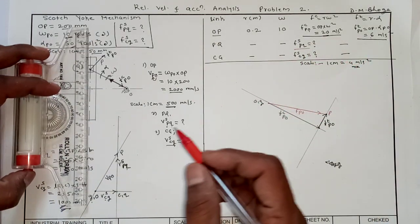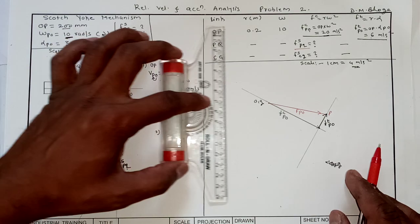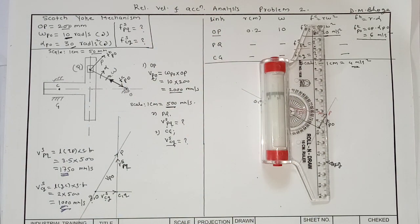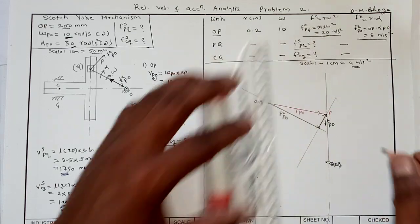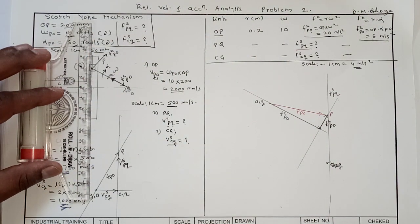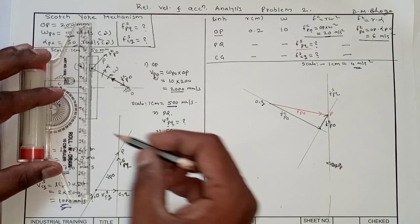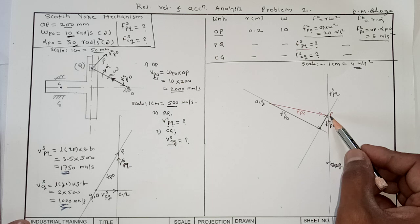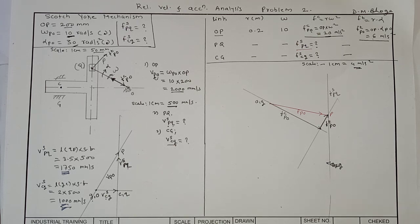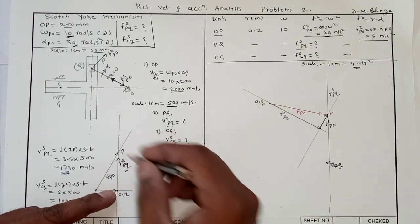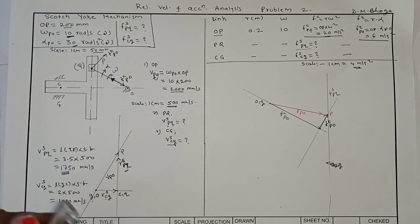The vector FS_PQ passes through point P in the vertical direction, since slider P slides vertically with respect to Q. We do not know the magnitude, so we do not know the length of the vector. We also do not know whether the slider is accelerating or retarding, so the direction is arbitrary. From the velocity polygon, slider P relative to Q is moving upwards, but whether it is accelerating or retarding is unknown, so this vector is of arbitrary length.